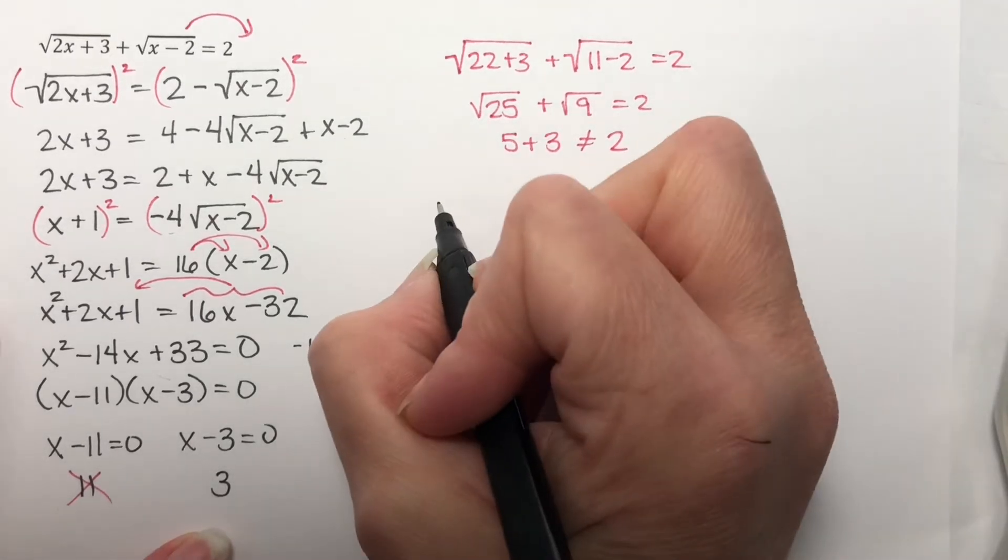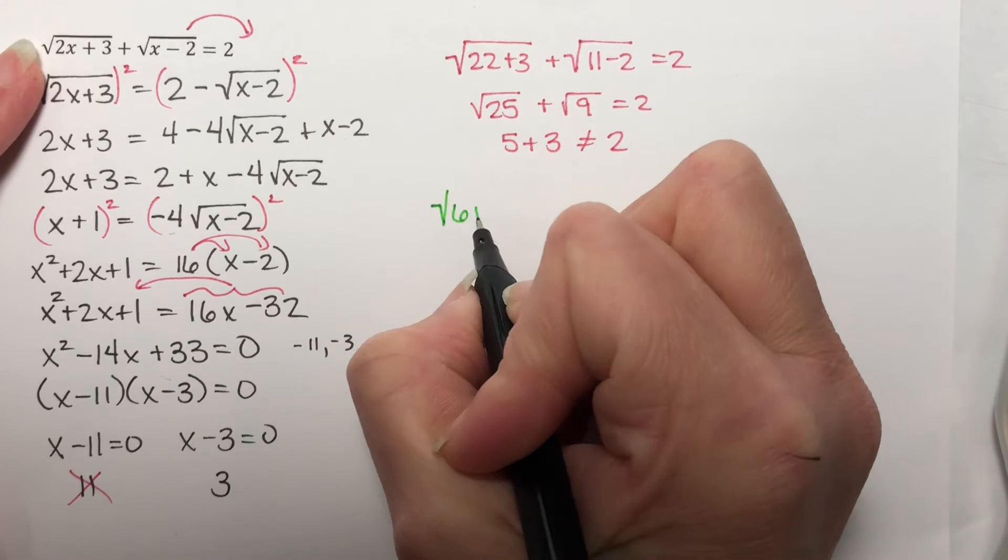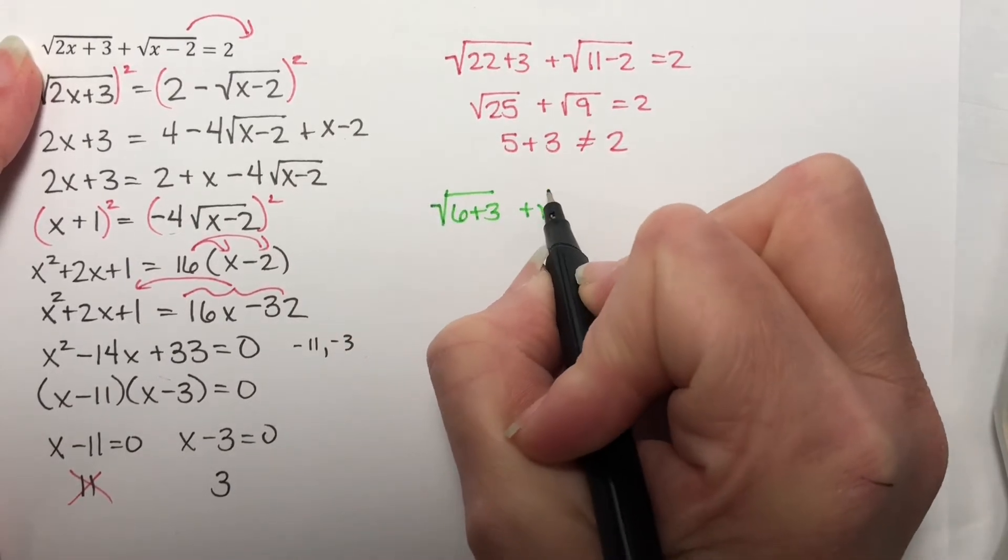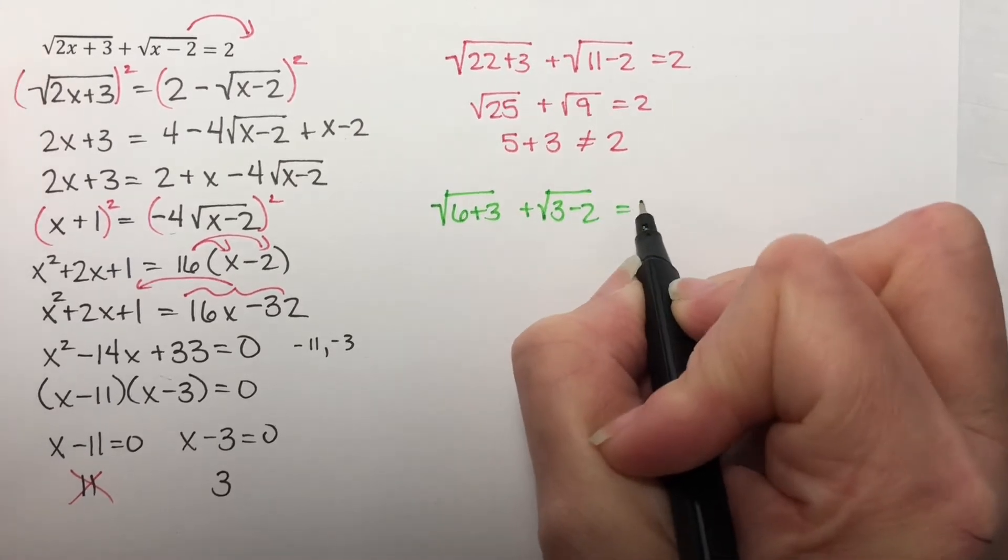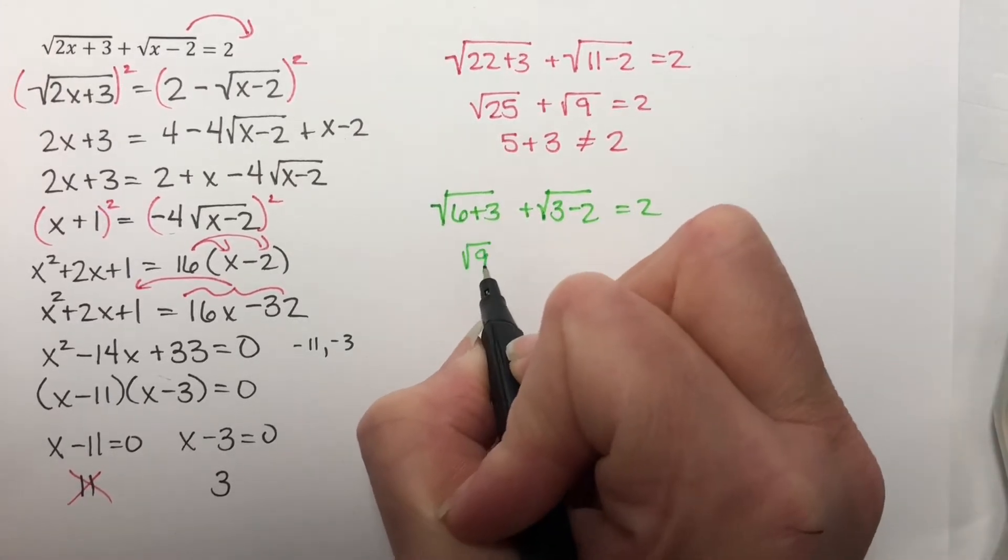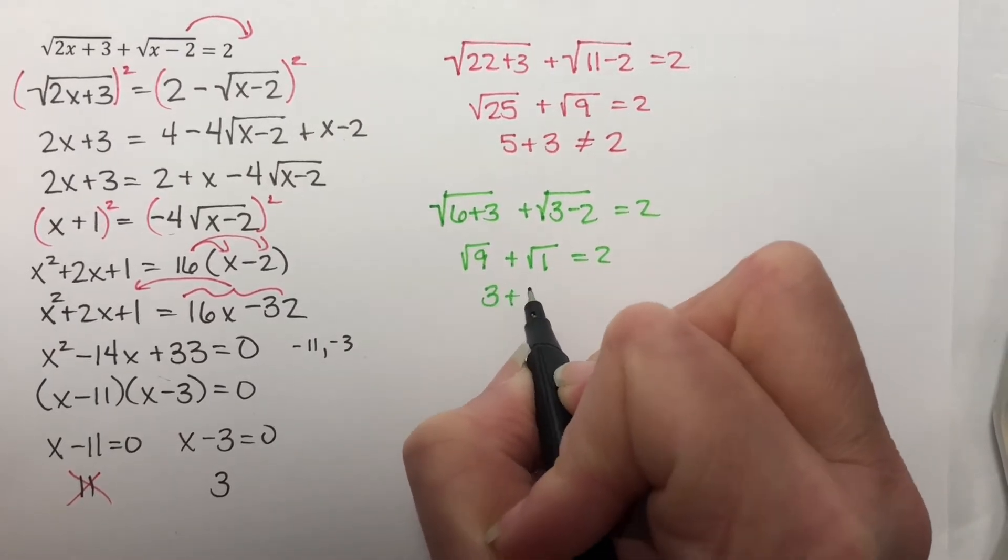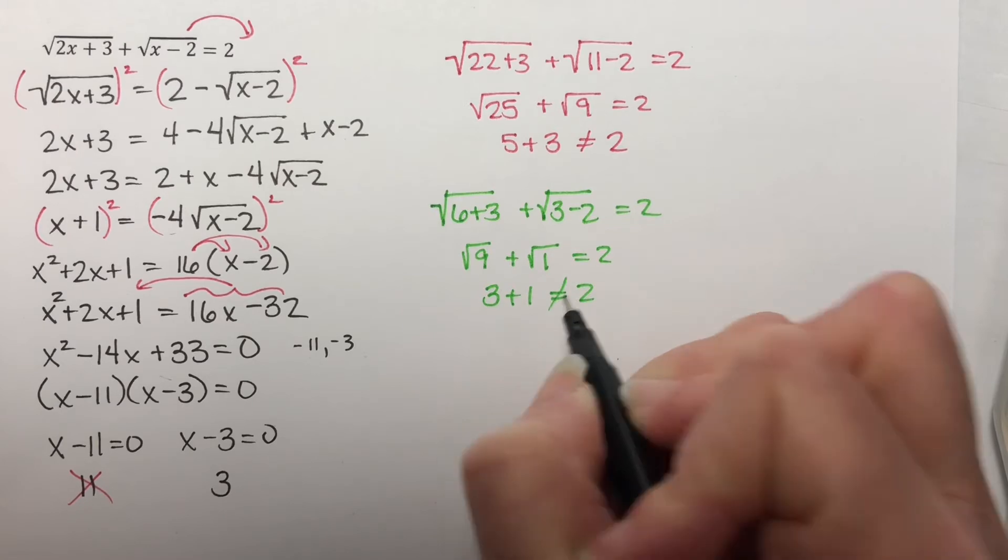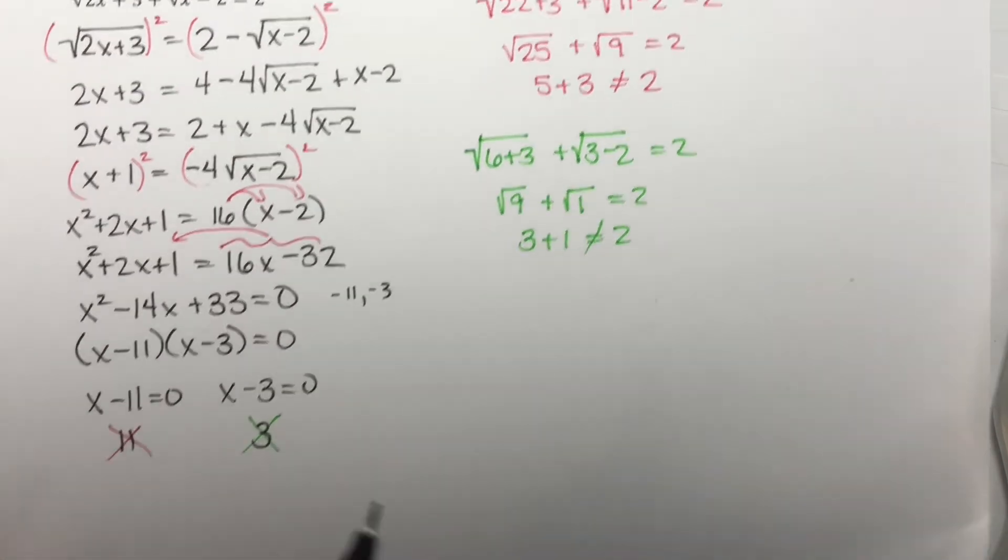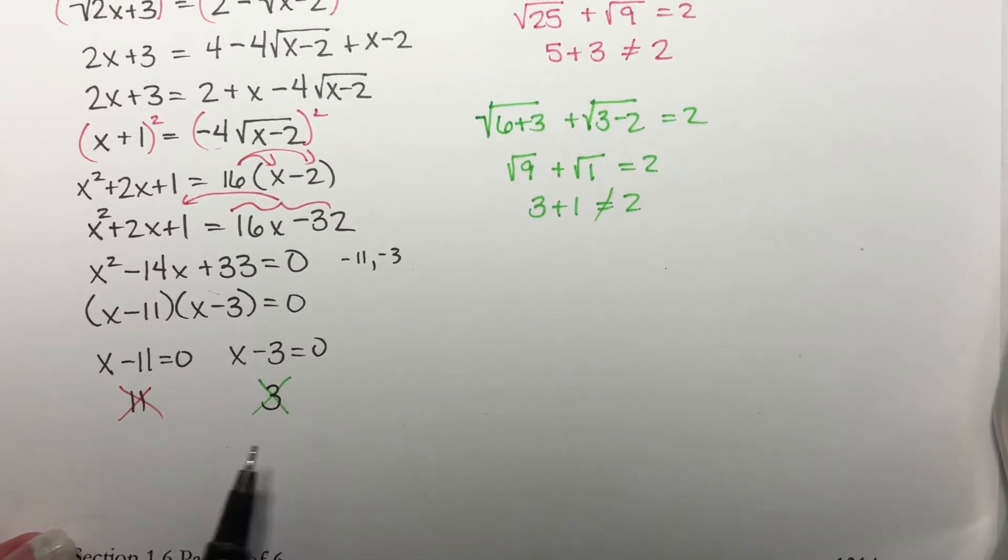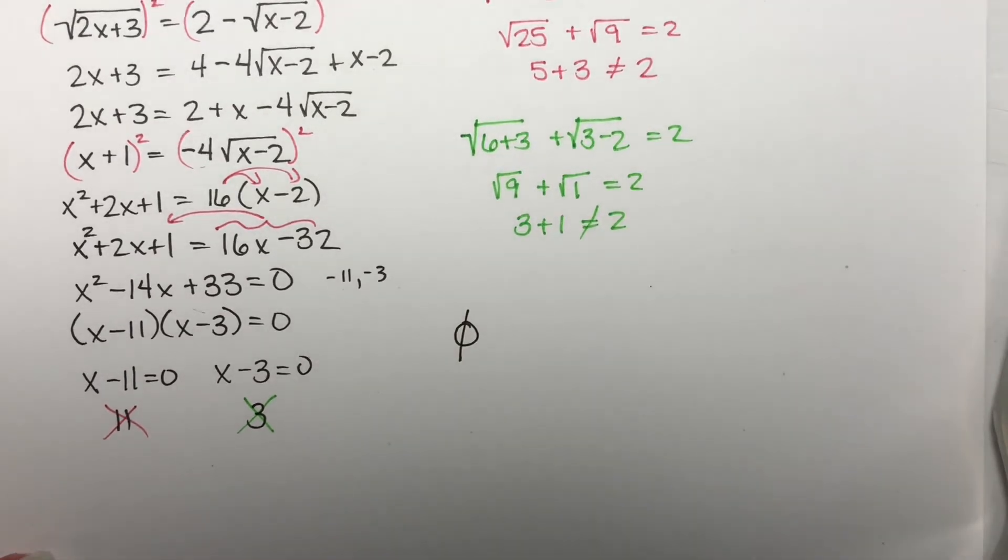Let's check 3. The square root of 2 times 3 is 6, plus 3, plus the square root of 3 minus 2, equal to 2. The square root of 9, plus the square root of 1, equal to 2. That says 3 plus 1, equals 2, which is definitely not true. So 3 was also a bad solution. We had two potential solutions, and neither one worked. So this problem has no solution at all.